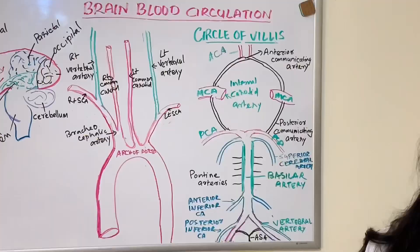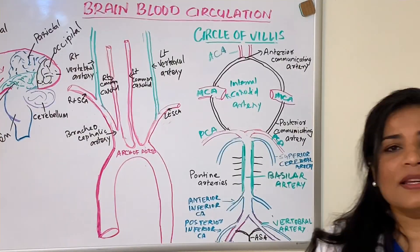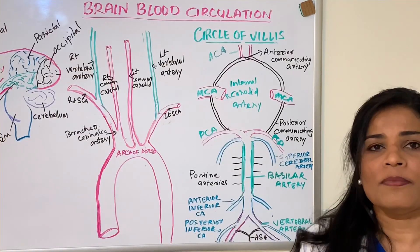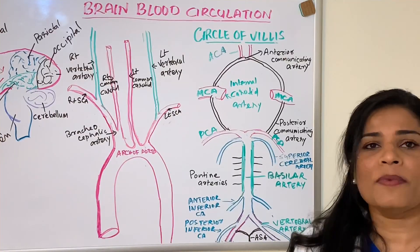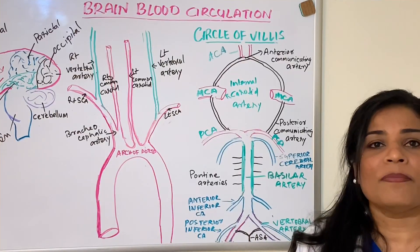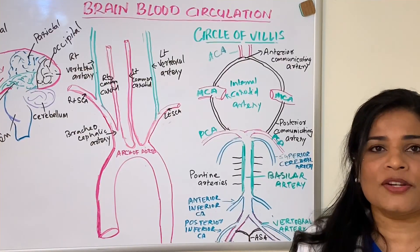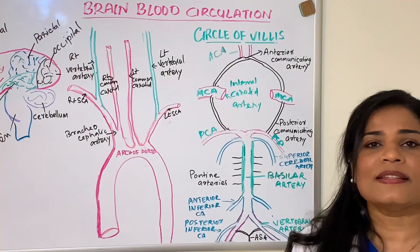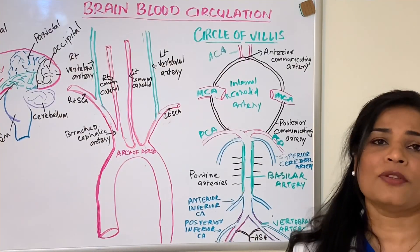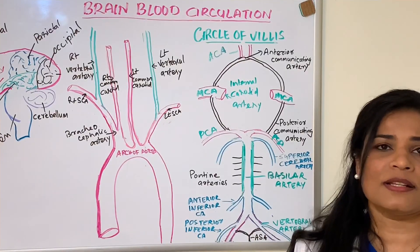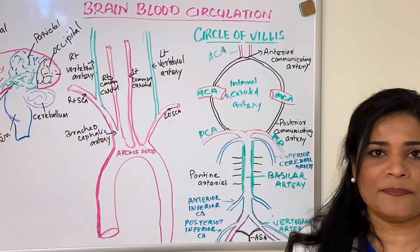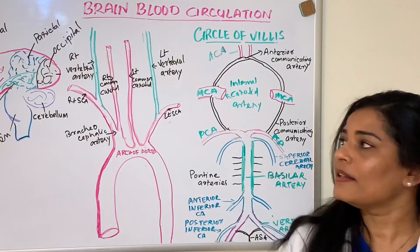The circle of Willis is a connection of blood vessels formed in a circle, which provides bypass circulation when there is any damage or blockage in the major blood vessels supplying the brain.